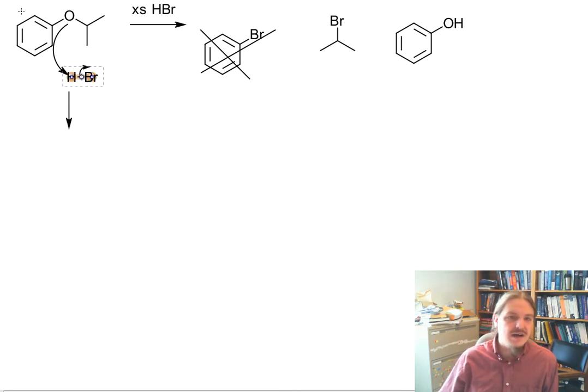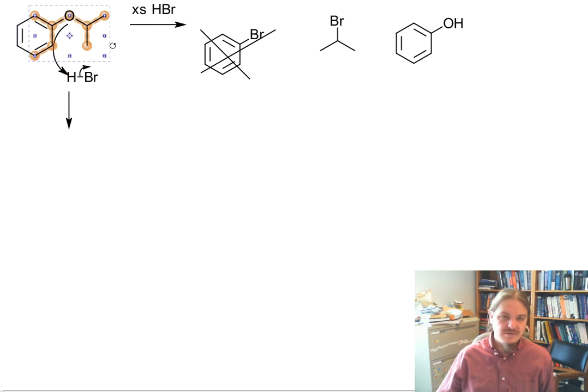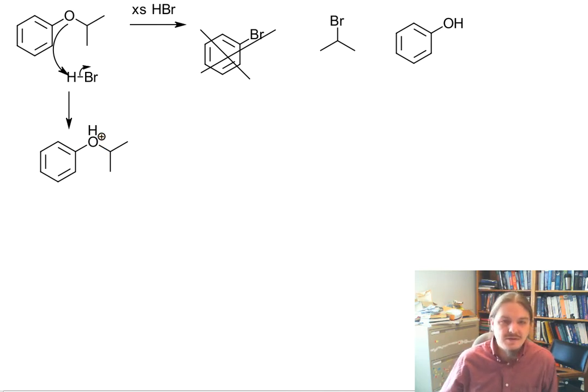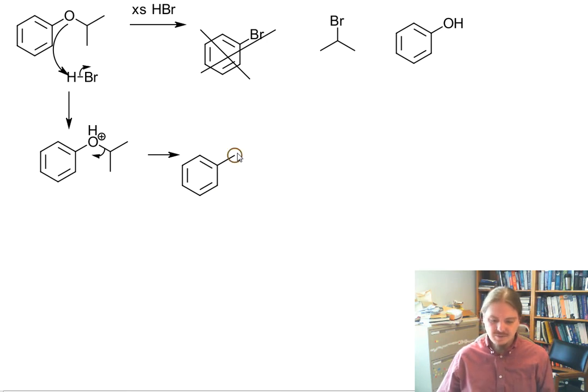Proton transfer to activate the first leaving group. Now we've got positive charge on the ether oxygen because I have a secondary group on one side. I can have the carbon oxygen bond break. We're going to get a carbocation and we're going to get phenol from the left hand side of the molecule.